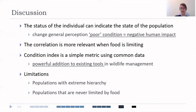Condition index itself is a really simple metric that can be calculated using common data—weight and length—which are usually available during any research surveys or even fishermen surveys. And condition index can be a powerful addition to existing tools when making decisions in wildlife management.